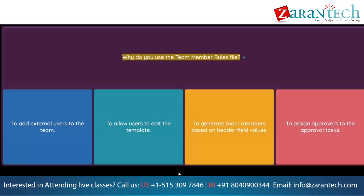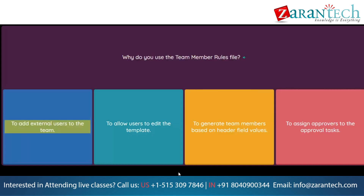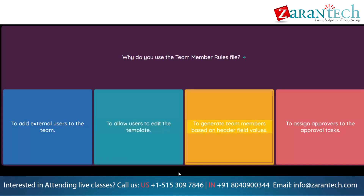Question: Why do you use the team member rules file? Option 1: To add external users to the team. Option 2: To allow users to edit the template. Option 3: To generate team members based on header field values. Option 4: To assign approvers to the approval tasks.